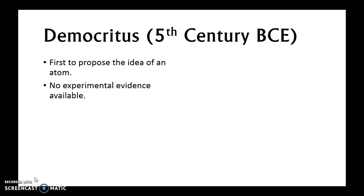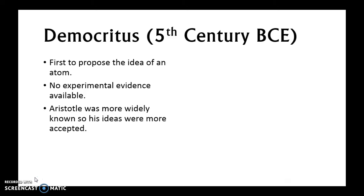He just had this thought experiment about a rock: if I divide this rock up, I'm still going to have a rock, but eventually I'll get down to the smallest available piece, which he called 'atomos.' Atomos was a Greek word that meant indivisible. But the problem is there was a more influential philosopher — Aristotle — whose ideas were more widely accepted, so Democritus' ideas were taken over.